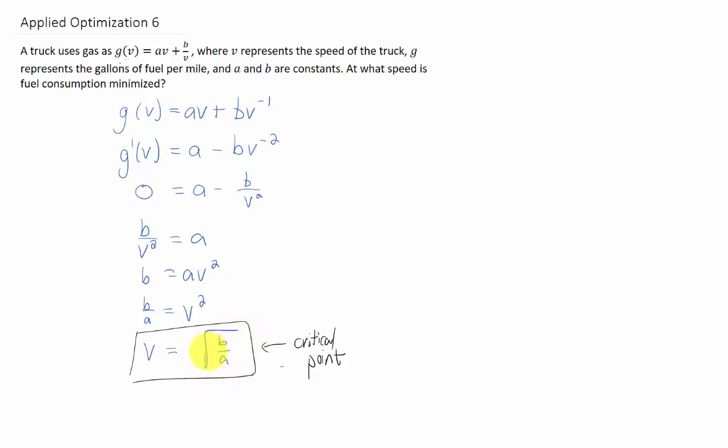Let's just assume that this all checks out. This velocity, square root of b over a, whatever those two constants are, is going to minimize our fuel consumption.